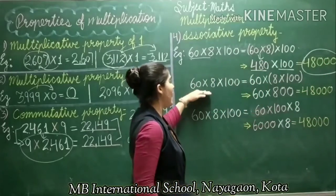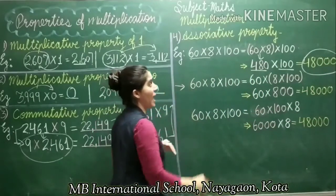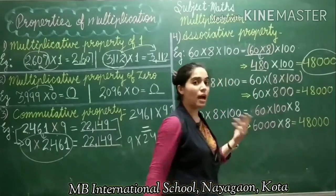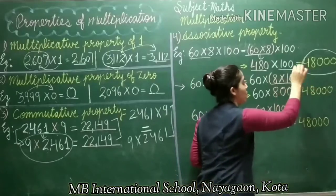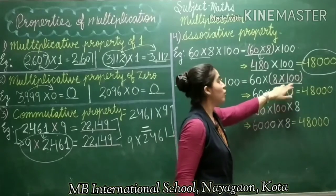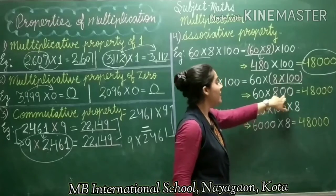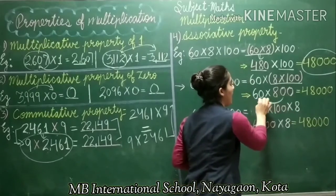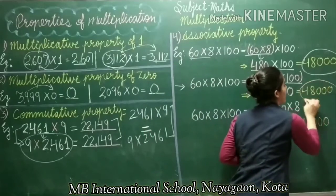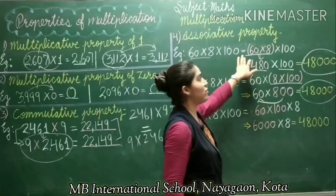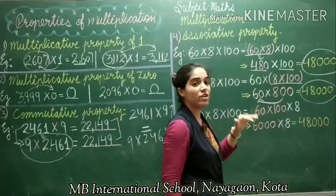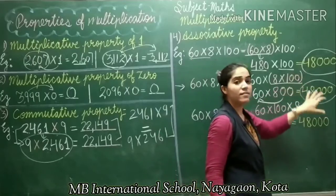Now in the next step, I change the group. According to associative property, I change the group. Earlier the group was 6 into 8. Now the group is 8 into 100. First I multiply 8 by 100 to get 800, then I multiply 800 by 6. After changing the group, I still got the same product, which is 48,000. The first group was 6 into 8, and here I changed it to 8 into 100, and after changing the group I got the same product.